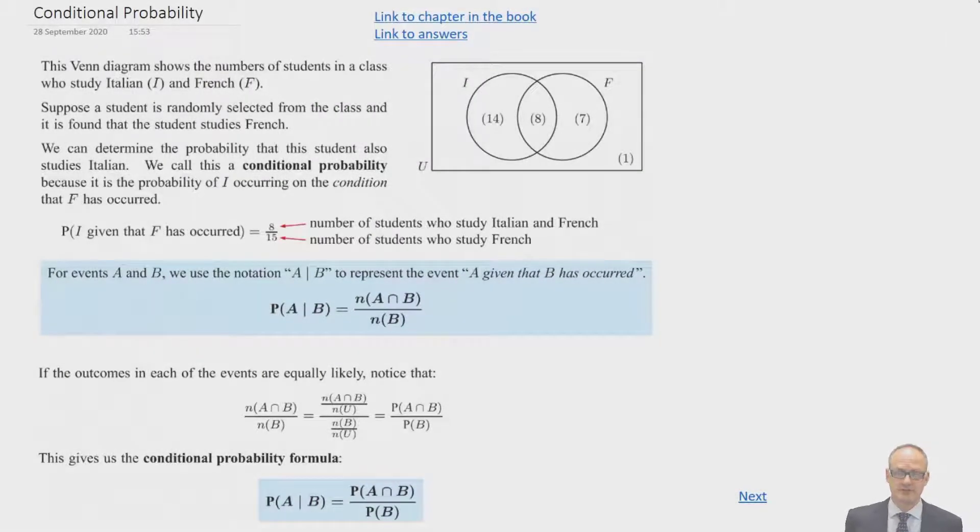Hello. We're going to look at conditional probability in this lesson. Let's look at the Venn diagram on this page. It shows the number of students in a class who study Italian in this circle and those who study French in this circle here. The eight in the middle are students who study both Italian and French, and the one outside are those who study neither of these subjects.